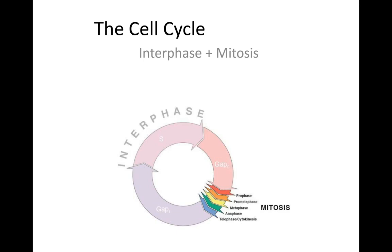Hey guys, how's it going? Today we are going to be talking about the cell cycle. The cell cycle is just that — it is a cycle involving cells. A cycle is something that repeats, and the cell cycle specifically is how we make more cells. Our bodies need to grow and to repair, and we need more cells in order to do that. The cell cycle has two main phases: interphase and mitosis.